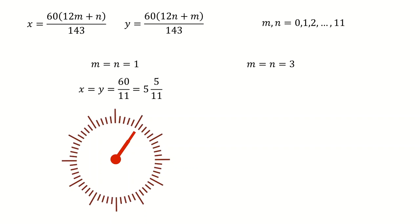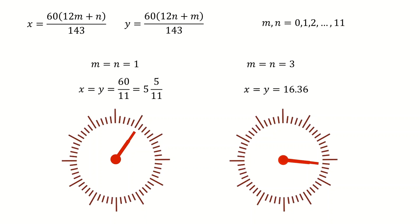Another case is m equal to n equals 3. In this case, you get x and y, both of them equal to 16.36, which gives you a little bit more than a quarter after 3.